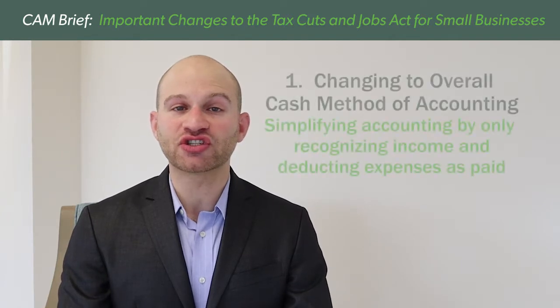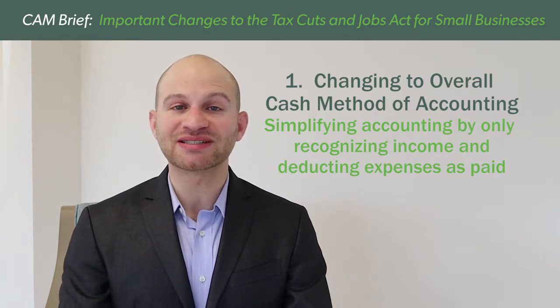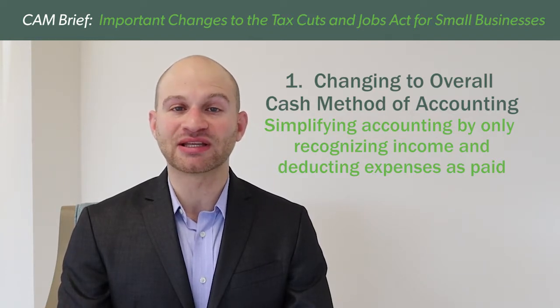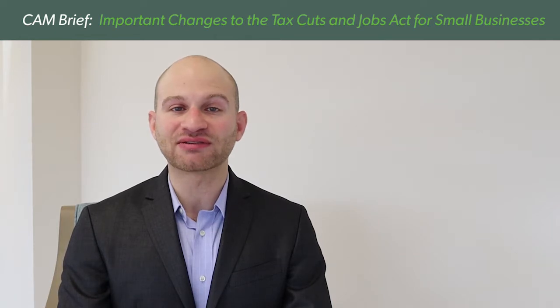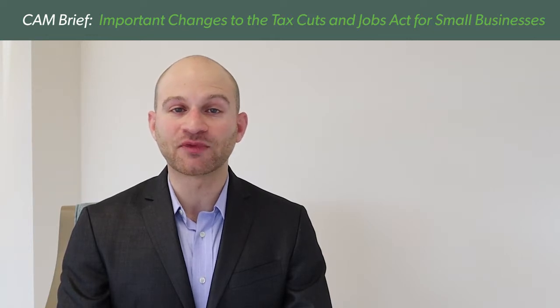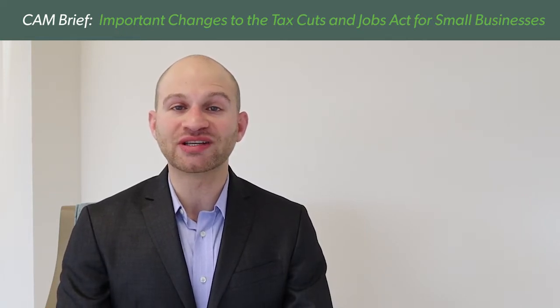The first change is changing to the overall cash method of accounting. By meeting the definition of a small business taxpayer, businesses can change to the cash method of accounting, which significantly simplifies accounting by only recognizing income and deducting expenses as paid. In addition, with the filing of the accounting method change, businesses will recognize a current year tax deduction from when prior revenues recognized exceed expenses recognized. In simple terms, generally, when accounts receivable exceed accounts payable, businesses will see a current year tax benefit with the filing of this change.